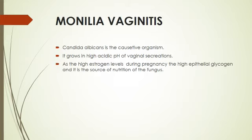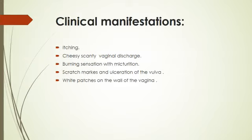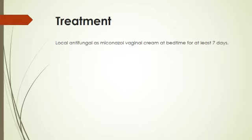Candidal vaginitis: Candida albicans is the causative organism. It occurs in the high acidic pH of vaginal secretion. High estrogen levels during pregnancy lead to high epithelial glycogen secretion, which serves as nutrition for the fungus. Clinical manifestations include itching, cheesy scanty vaginal discharge, burning sensation with micturition, scratch marks, and aspiration of the vulva with white patches on the vaginal walls. Treatment: local antifungal metronidazole vaginal pessary at bedtime for at least seven days.